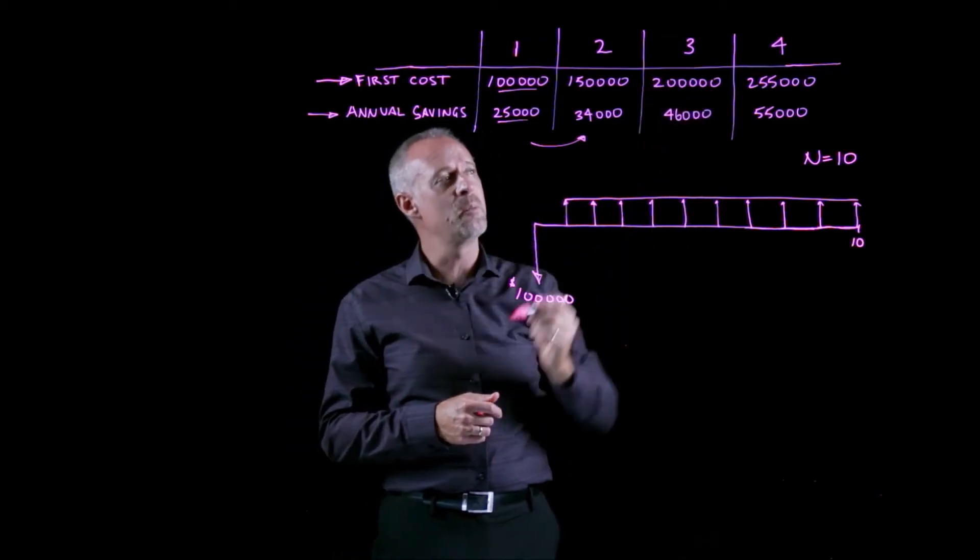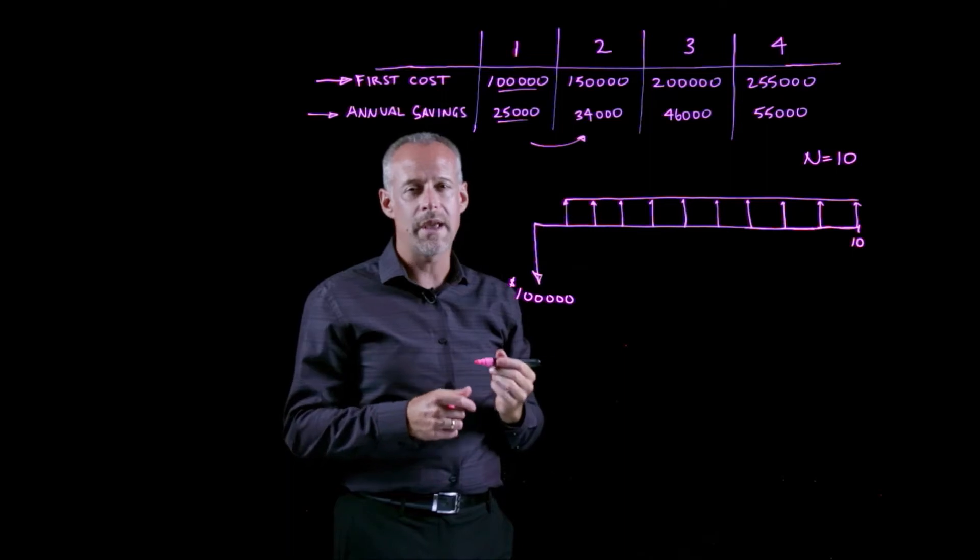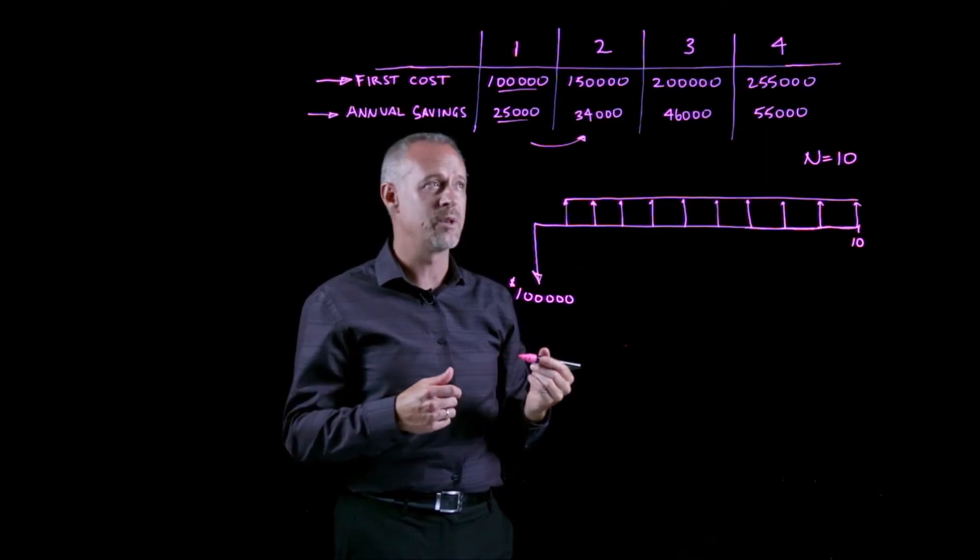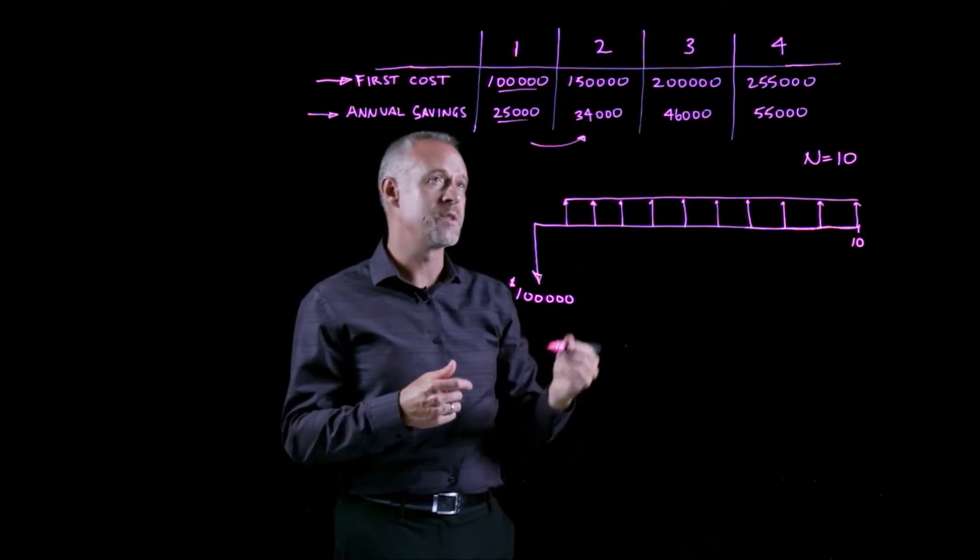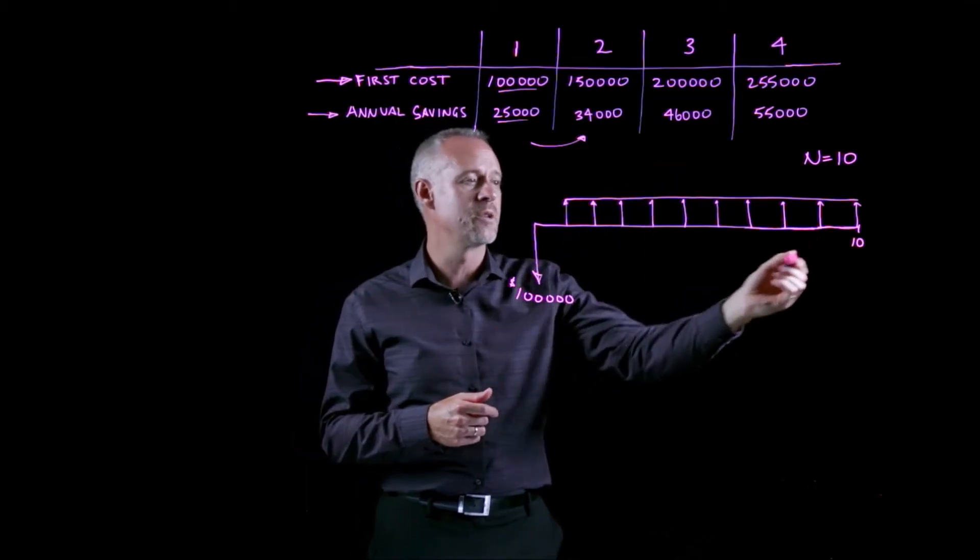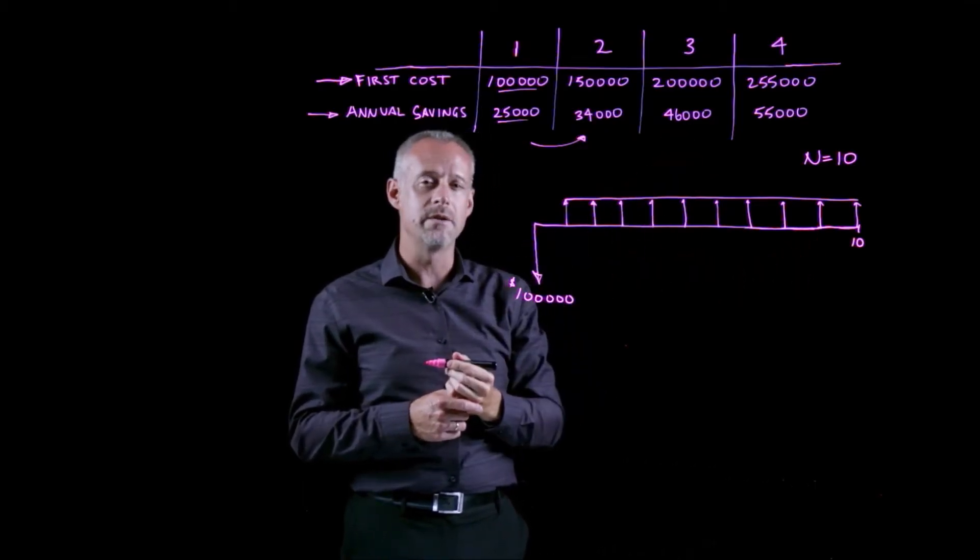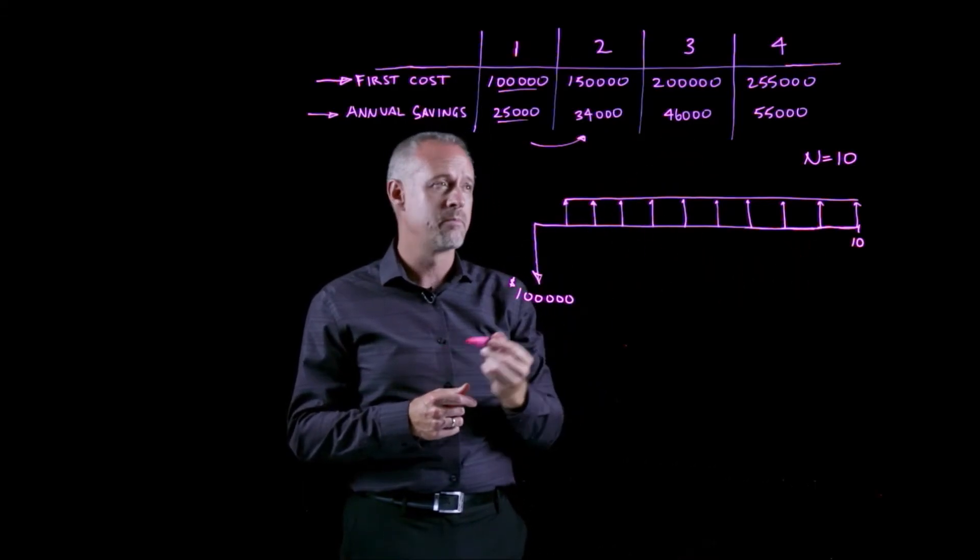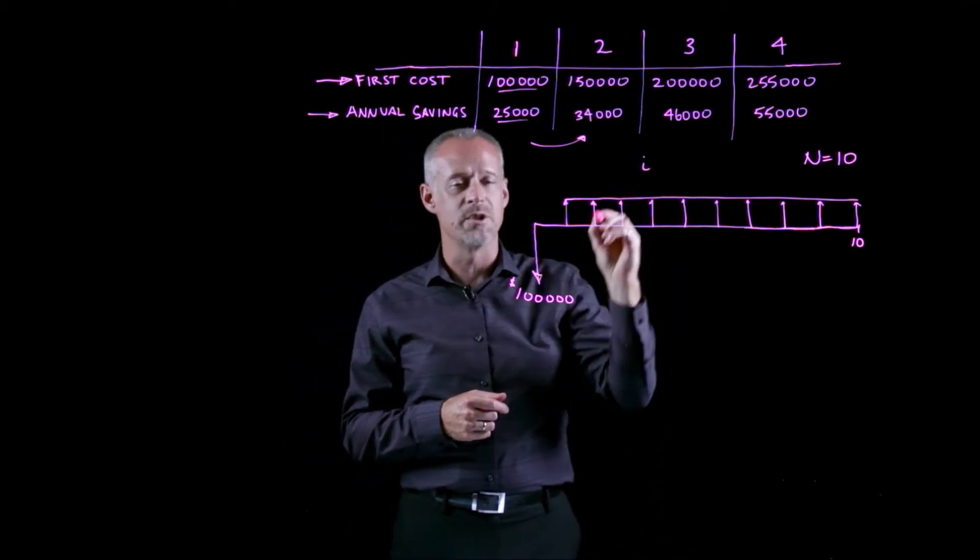Just by looking at the numbers, we really can't tell which investment is better because underlying all of this calculation is an interest rate. So if we think about there's an interest rate, and in fact, we learned that this company uses a MAR equal to 15%.